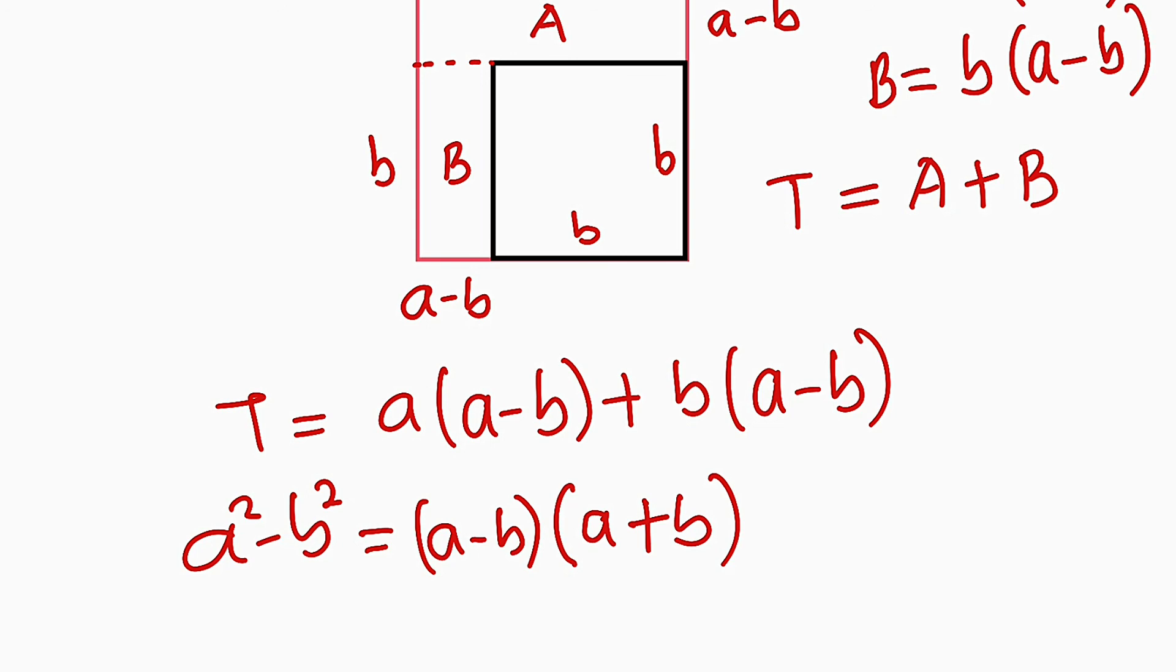And hence, if you factorize a squared minus b squared, which is difference of two squares, you have to obtain a minus b multiplied by a plus b. And this is all I have for you today.